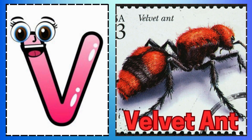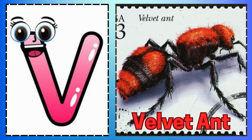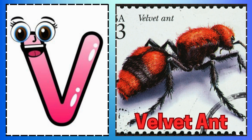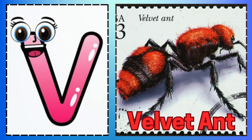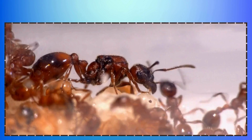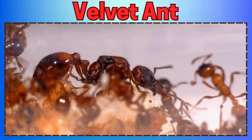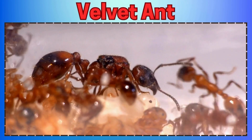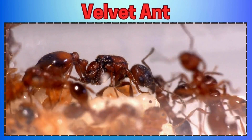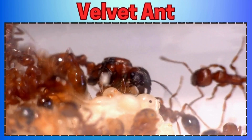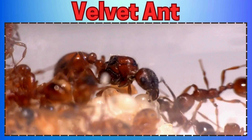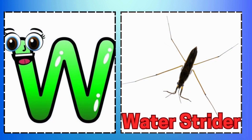Q is for Queen Butterfly. V is for Velvet Ant. S is for Stick Insect Looking like a Twig. T is for Termite Building Homes so Big. U is for Underwing Moth Hiding in Trees. V is for Velvet Ant Crawling with Ease.